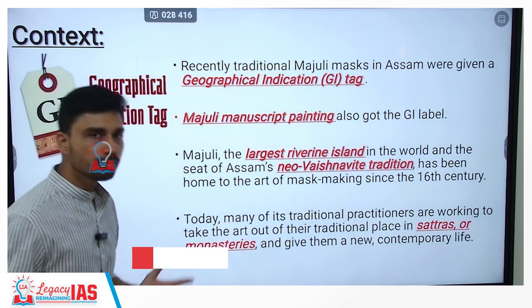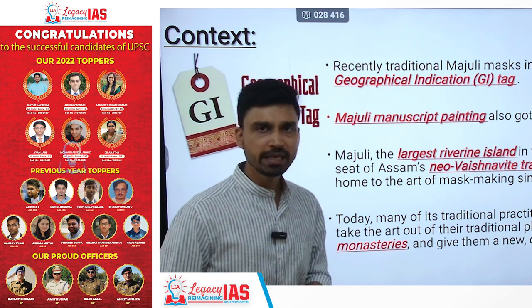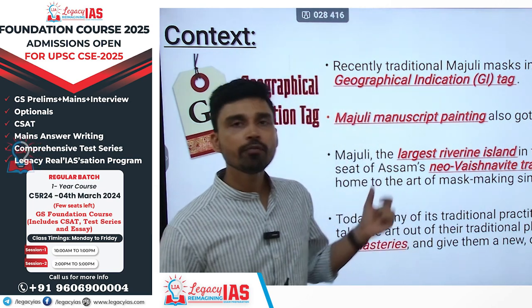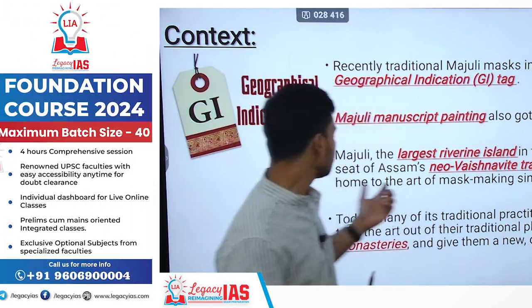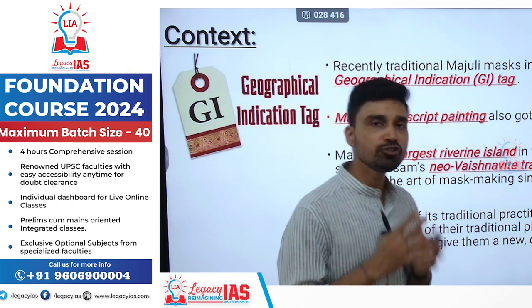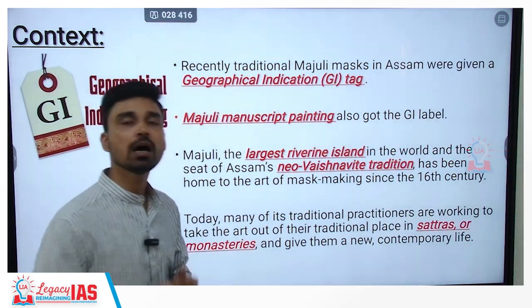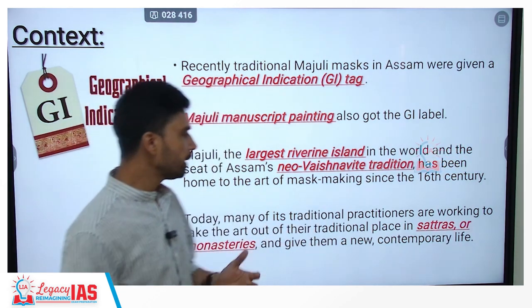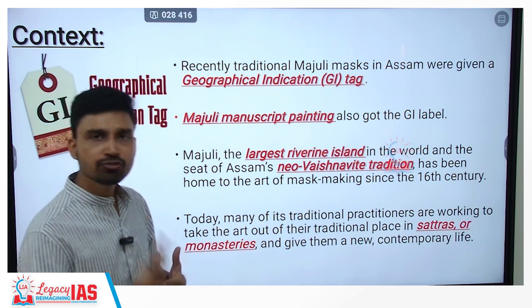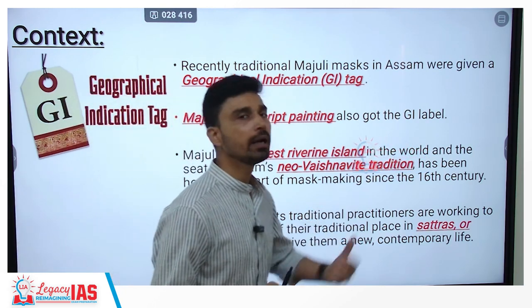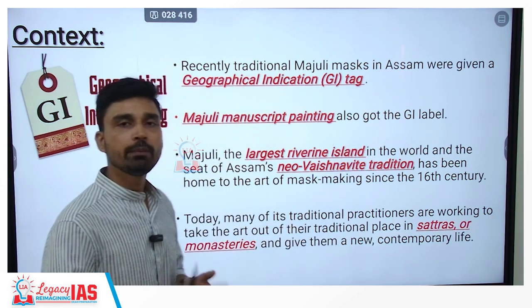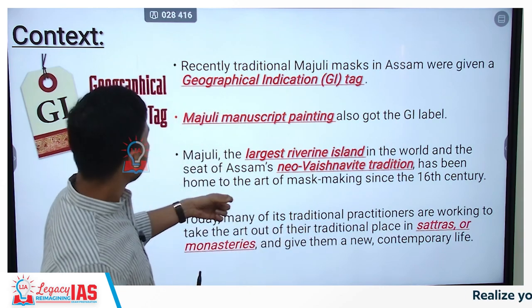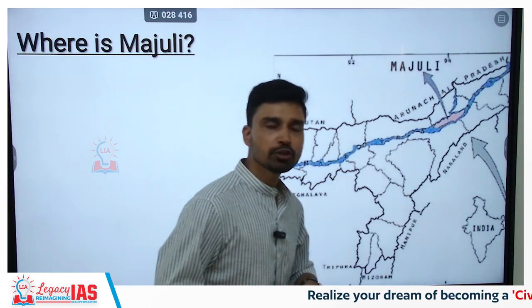Majuli is a very important place because it is the largest riverine island in the world and the seat of Assam's neo-Vaishnavite tradition, which has been home to the art of mask making since the 16th century. Today, many practitioners are working to take the art out of their traditional place in the Satras, or monasteries, and give it a new contemporary life to make it more popular and sustainable for those deriving their livelihood from mask making.